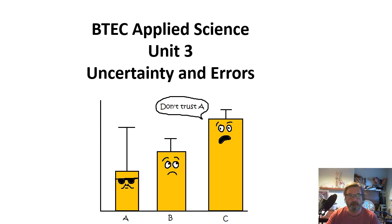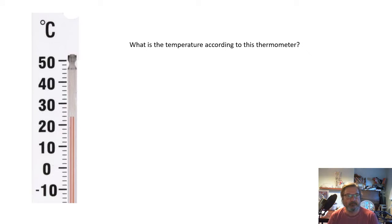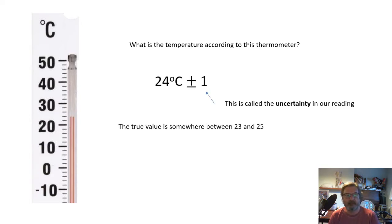So we'll start off with this. Look at this thermometer and tell me what is the temperature according to this thermometer. Looking at this, each scale division is 2 degrees, so you could say possibly it's 24 degrees centigrade. Well, we should give a little bit more information than that. It's actually 24 plus or minus 1, and this plus or minus 1 is called the uncertainty in our reading. What it means is that the true value, the actual temperature, is somewhere between 23 and 25.